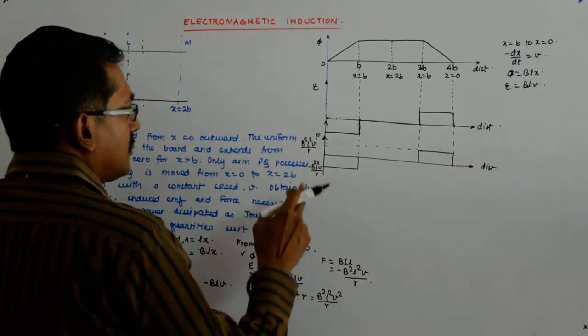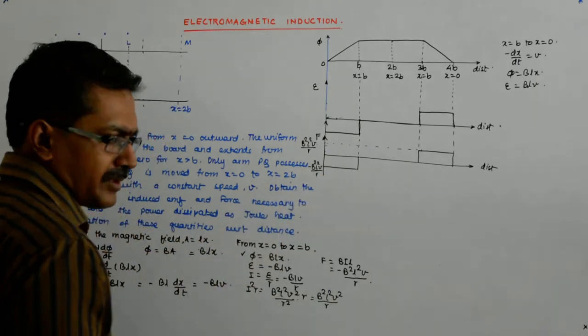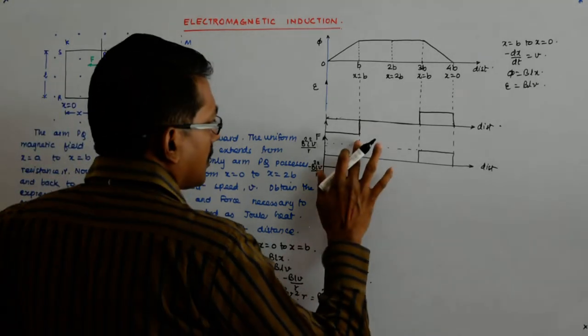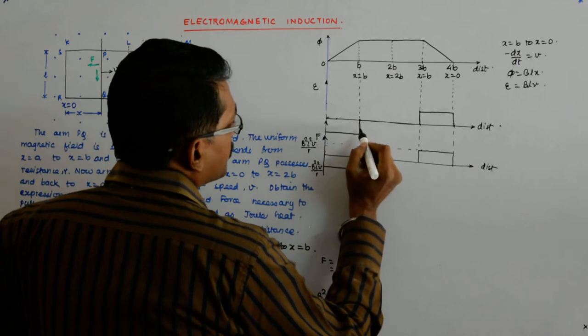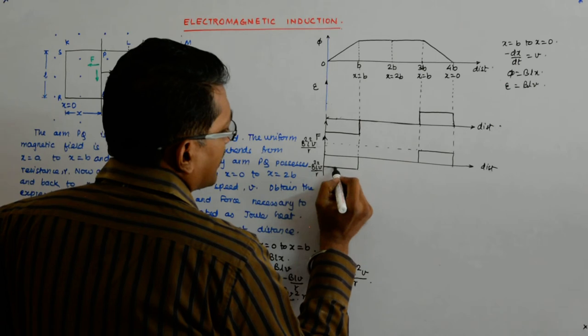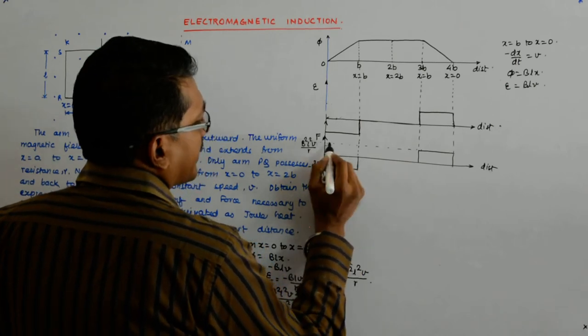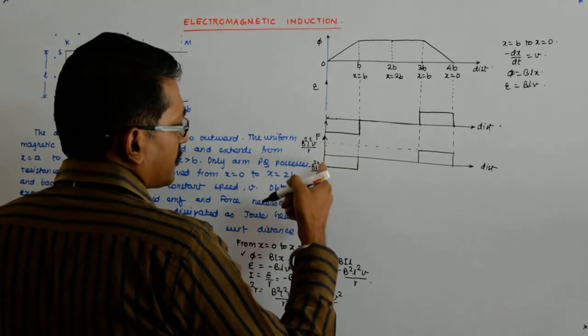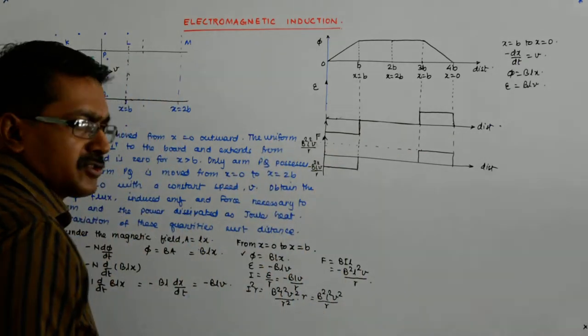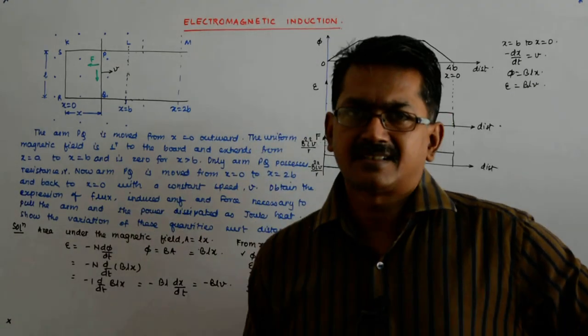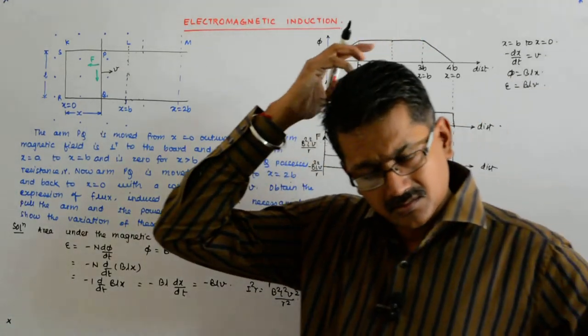It is always the same. At x equal to b, the value is minus b square l square v by r. This is to show that these coincide. The solid one is the graph. The dotted ones, for example this dotted, does not show the force. I am trying to show that this is minus b square l square v upon r, this is plus b square l square v by r. The dotted lines are not the part of graph. That is a convention.